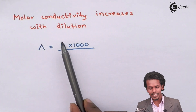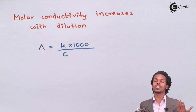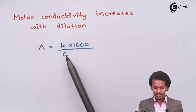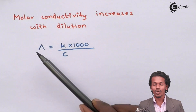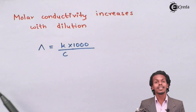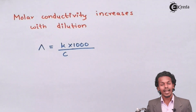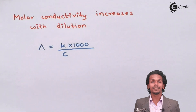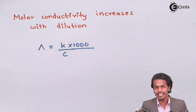This leads to a possible confusion: if κ, the conductivity, increases, shouldn't molar conductivity also increase? That is true, but in the formula for molar conductivity, the net effect of concentration is what matters most. If concentration is less, molar conductivity will be more. Hence, molar conductivity increases with dilution, while conductivity increases with concentration — that is, with the number of ions present in a unit volume of an electrolytic solution.